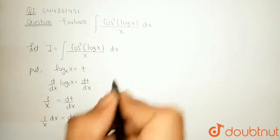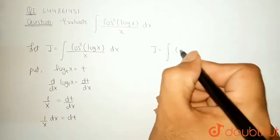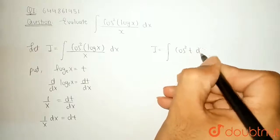So, our integration becomes I is equal to integration of cos square t dt.